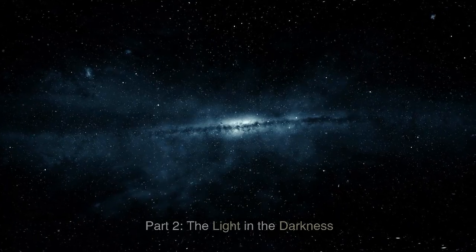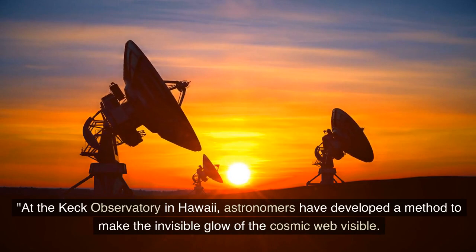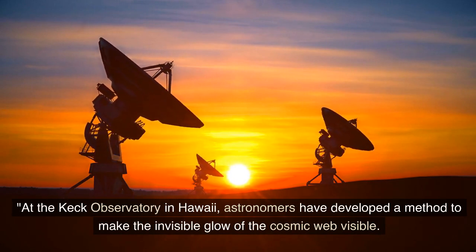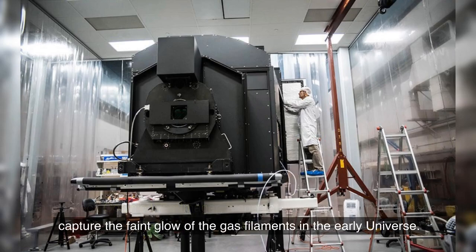Part 2, The Light in the Darkness. At the Keck Observatory in Hawaii, astronomers have developed a method to make the invisible glow of the cosmic web visible. With the Keck Cosmic Web Imager, a special spectrometer, they managed to capture the faint glow of the gas filaments in the early universe.